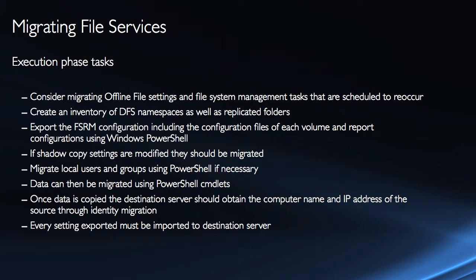First of all, consider migrating offline file settings and file system management tasks that are scheduled to re-occur. Offline file settings and caching settings on the folders will need to be manually re-done. Any file system management tasks like the execution of certain quotas, certain disk reports and those kinds of things — make sure that we have actually migrated those over and recreated them on the other side.